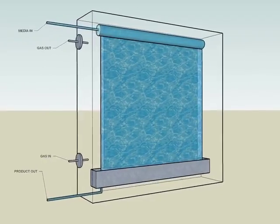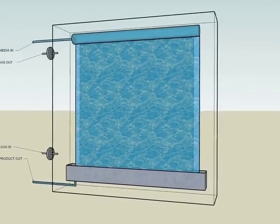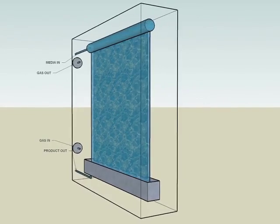Ports positioned at the top and the bottom of the reactor ensure even flow and distribution of gases into the system.